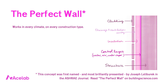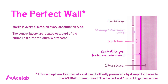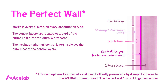Then we have the structure — any kind of structure, could be a mass structure, could be framed, whatever. The three most important relationships that make the perfect wall so universally functional are: one, the control layers are located outboard of the structure, where they are best positioned to protect the structure; two, the thermal control layer is always the outermost of the control layers; and three, there is a drainage and ventilation space behind the cladding.